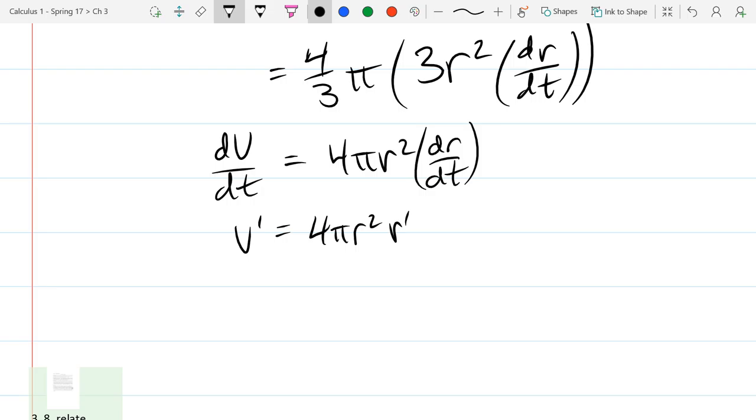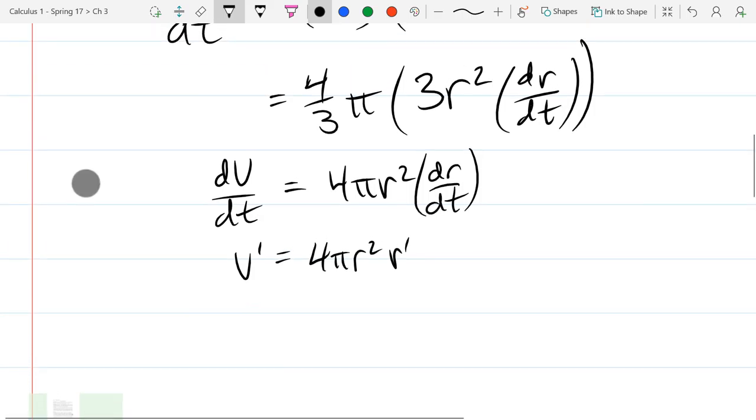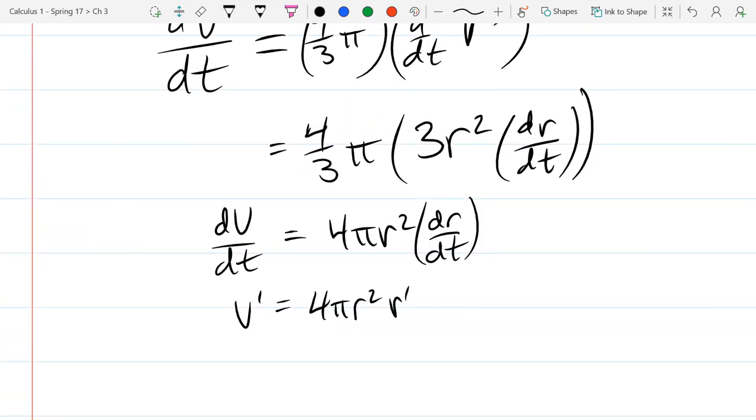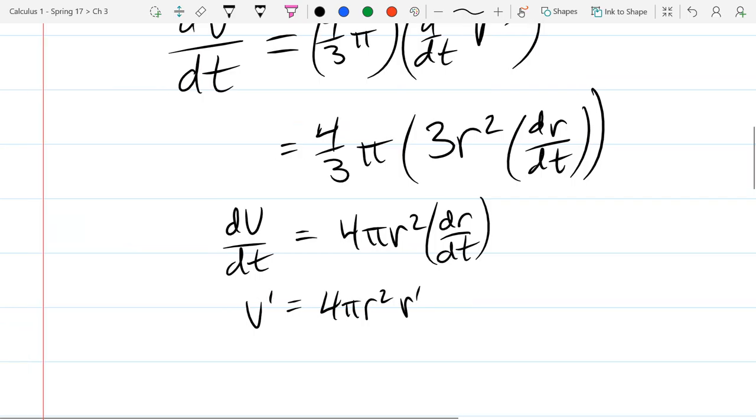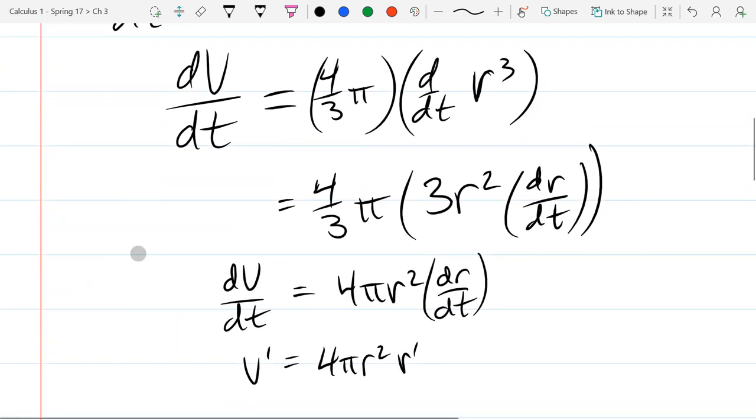And if you want, you can write it as just v prime and r prime. Make sure you don't write anything under the first power. You can choose how you want to write your derivative, dv dt or just v prime. You just have to know what variable you're taking derivative with respect to.